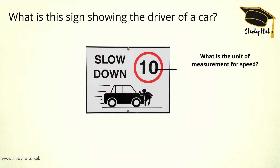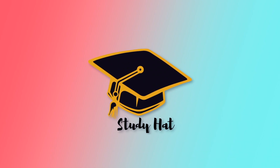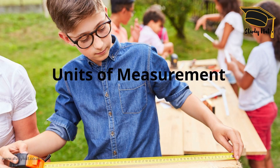So how many of you are paying attention just now? What is the unit of measurement for speed? The unit of measurement for speed in this case is miles per hour, but speed can also be measured in kilometres per hour. That's it for today's video — I hope you enjoyed. If you have any questions, reach out to us at support@studyhat.com.